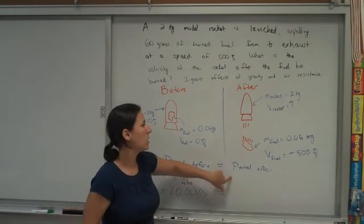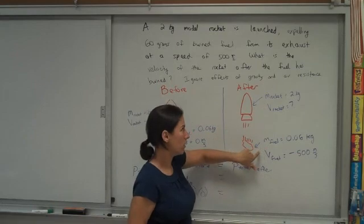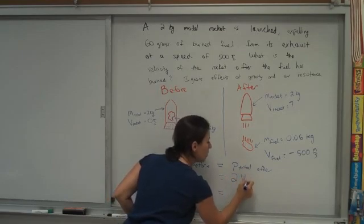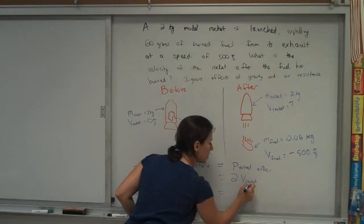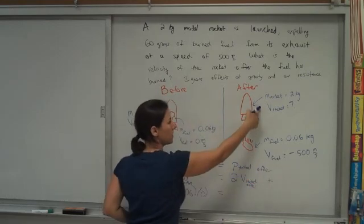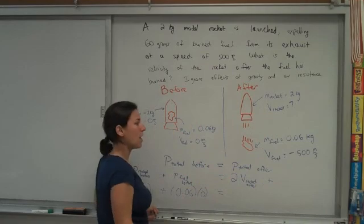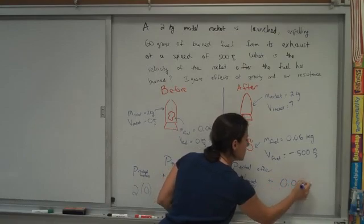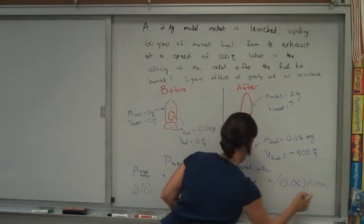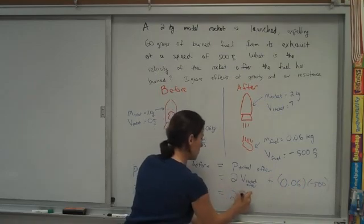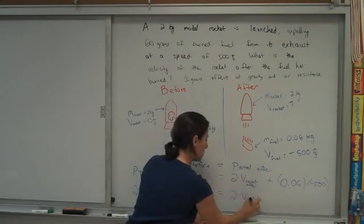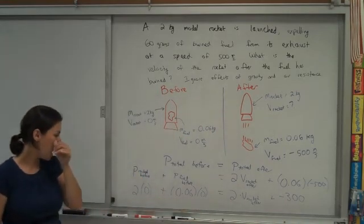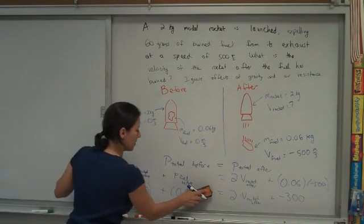So we have to say that's equal to momentum afterward. Afterward, the rocket has momentum, as does the fuel. The rocket's momentum is its mass times velocity. We don't know the velocity, but its mass times whatever that velocity of the rocket afterward is. And that's one thing in the picture. And we have to add the momentum of the other thing in the picture. And that's the fuel. So we're going to add the momentum of the fuel. The fuel's momentum is its mass times its velocity. And so you can see that if this whole left side is 0...